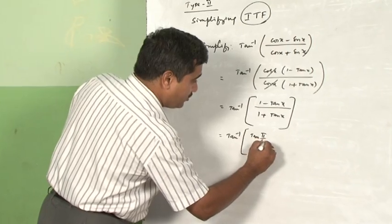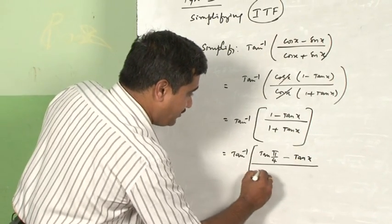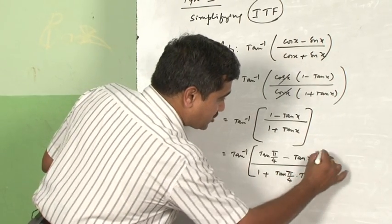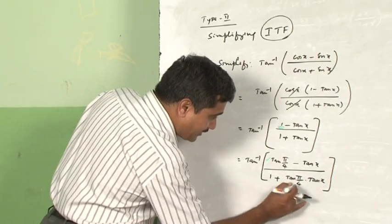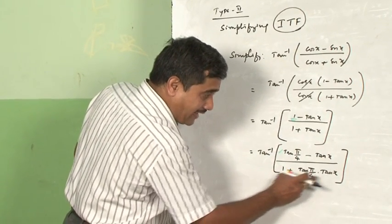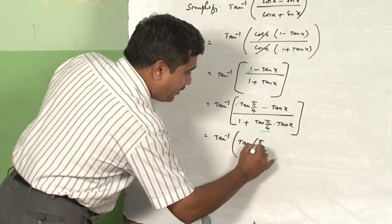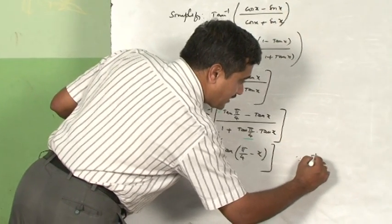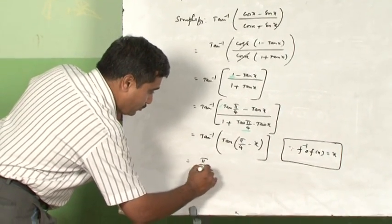What I did basically in this problem is write 1 as tan(π/4), so the numerator becomes 1 − tanx and denominator 1 + tan(π/4)·tanx. The whole structure has changed to tan(a) − tan(b) upon 1 + tanA·tanB, which is the known formula. So this equals tan⁻¹(tan(π/4 − x)), and by the invertibility rule f⁻¹(f(x)) = x, you get π/4 − x.